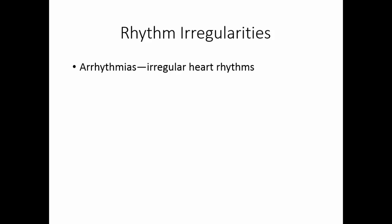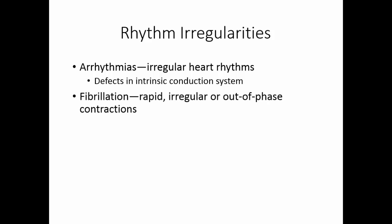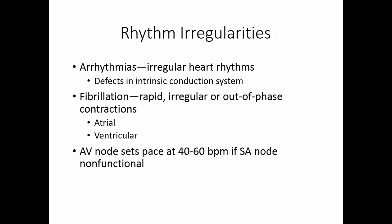Arrhythmias are irregular heart rhythms, usually due to some defect in the intrinsic conduction system. Fibrillation is when you have rapid, irregular, or out-of-phase contractions. This can occur in the atria — atrial fibrillation — or the ventricles — ventricular fibrillation. Because the atria are not very effective pumps, atrial fibrillation is much less damaging than ventricular fibrillation. If the ventricles are not contracting as a unit, blood is not being sent out of the heart. The AV node can set the pace at 40 to 60 beats per minute if the SA node becomes nonfunctional, which is fast enough to maintain circulation.